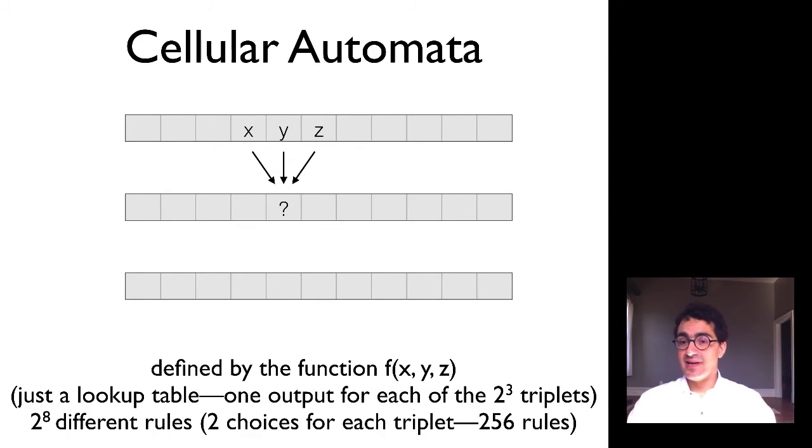Two choices for each value of the triplet. And so in fact for a cellular automata defined by a neighbor rule like this one, there's only 256 possible rules that you can have. There's only 256 distinct functions f.